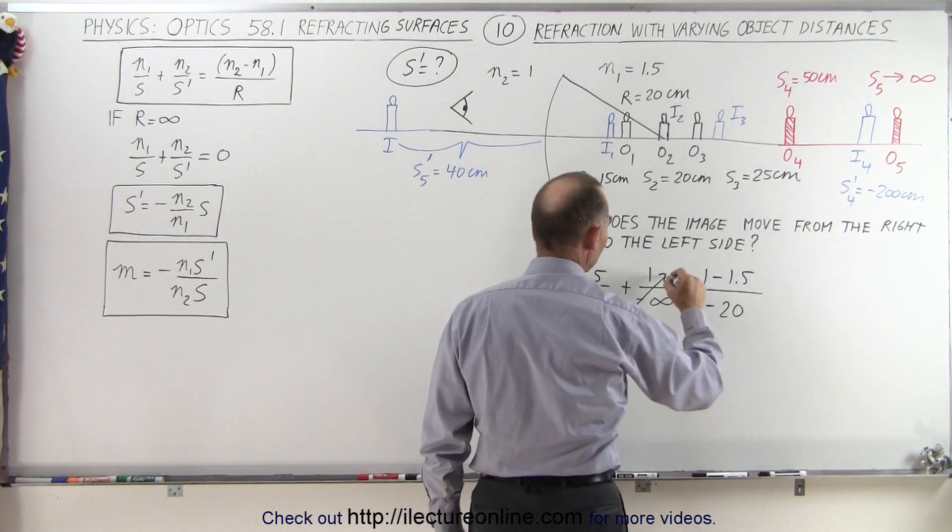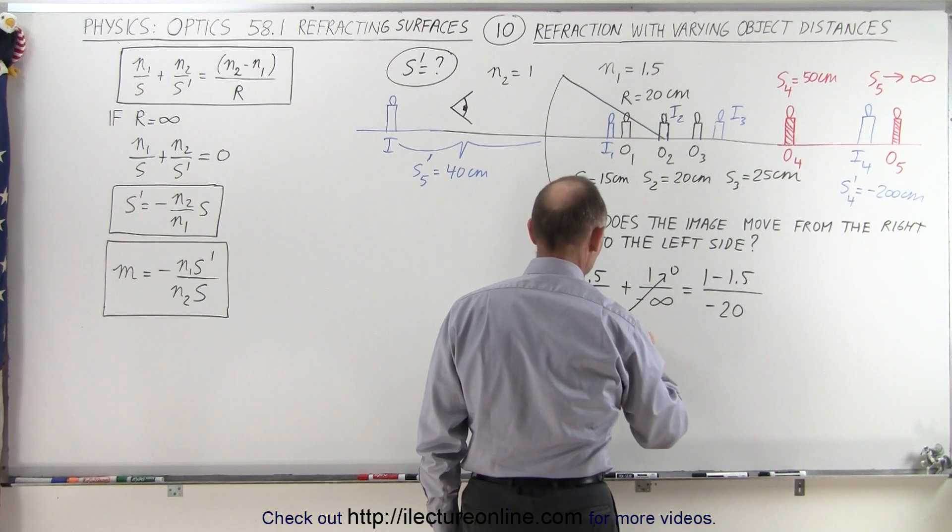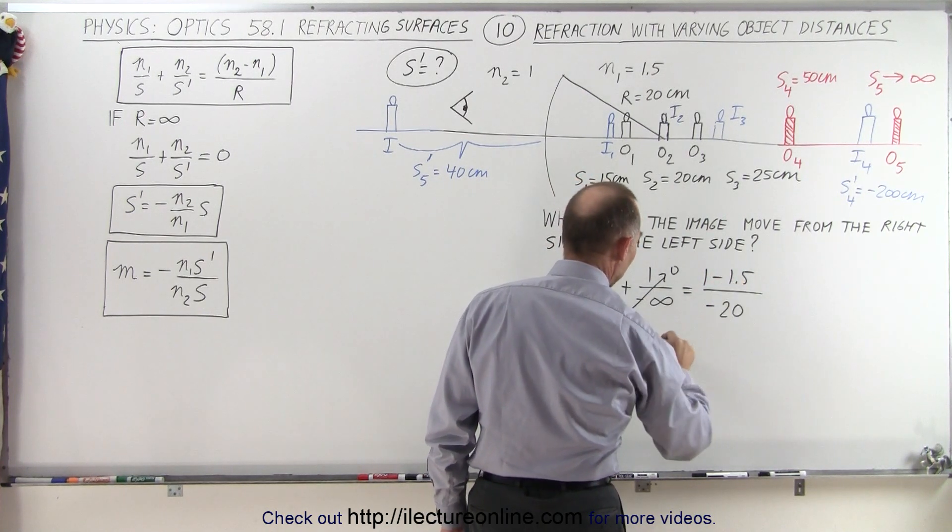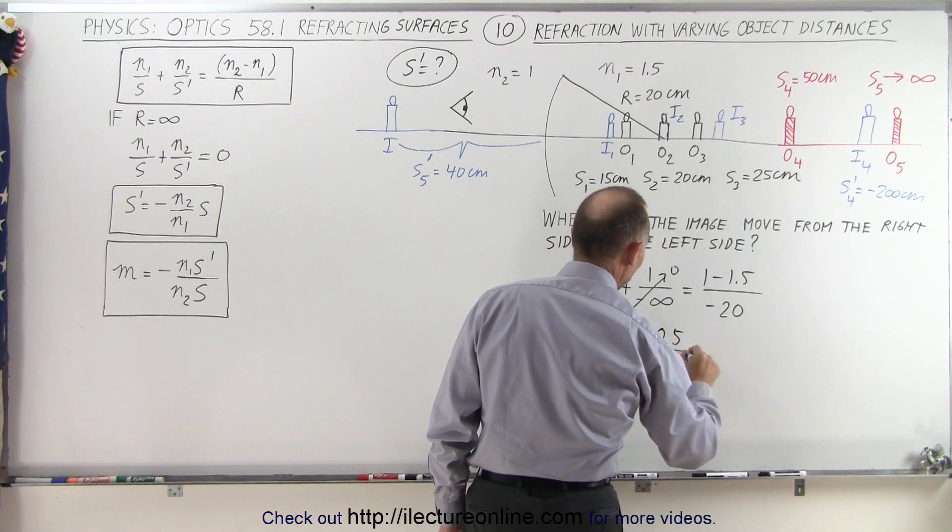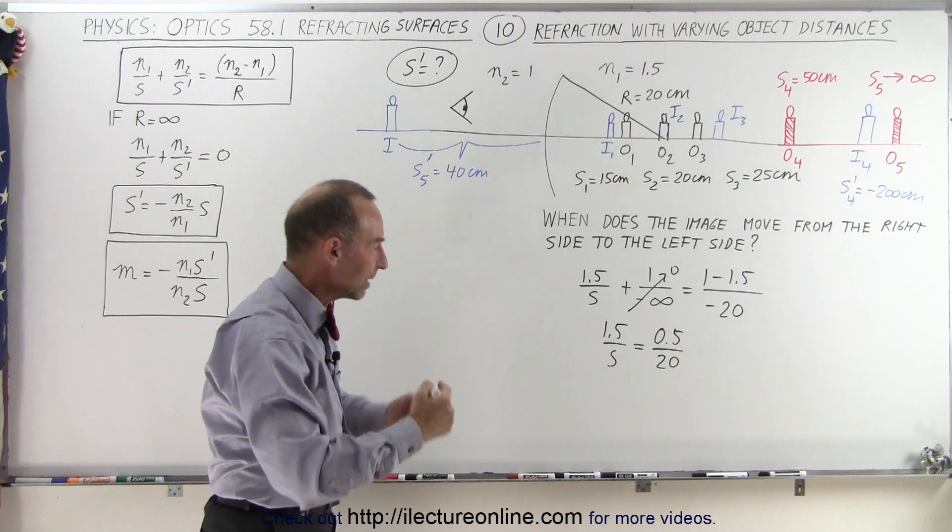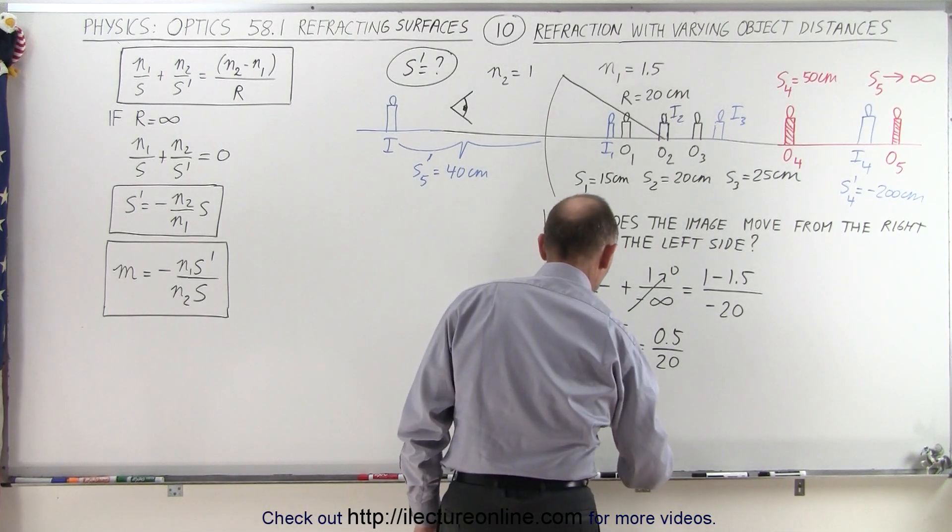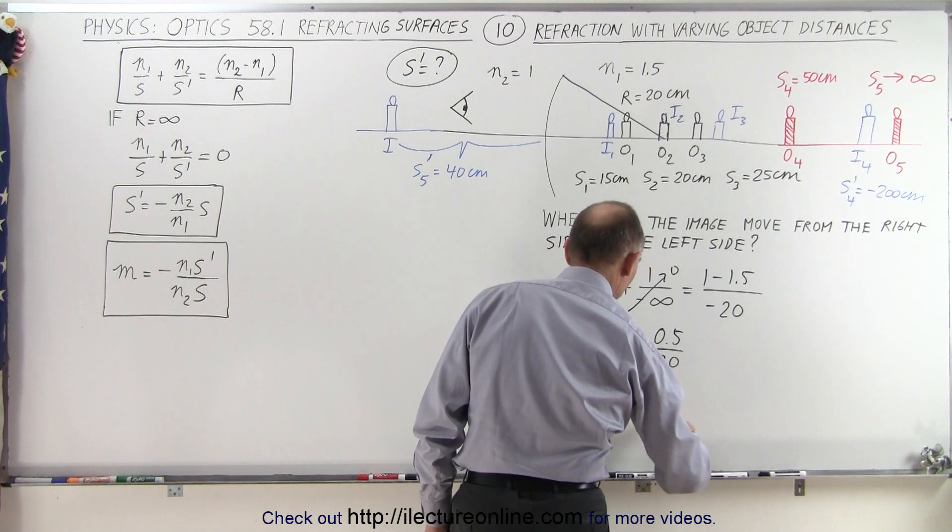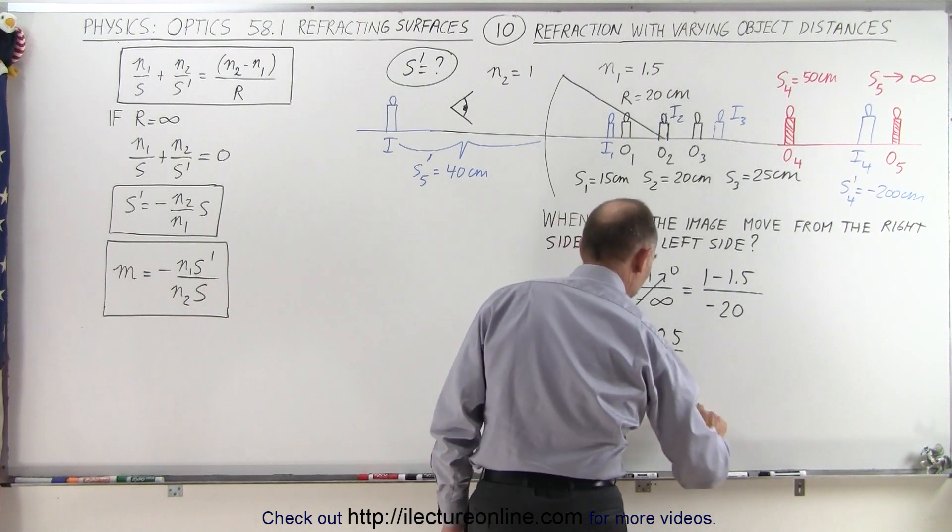So this here will go to 0, which means that 1.5 divided by S is going to be equal to positive 0.5 divided by positive 20, because the negatives cancel out. So now we take the inverse of that, so S divided by 1.5 is equal to 20 divided by 0.5, which is equal to 40.